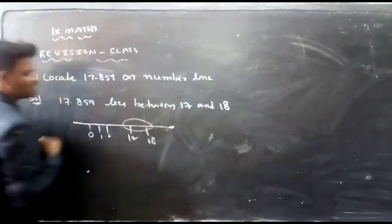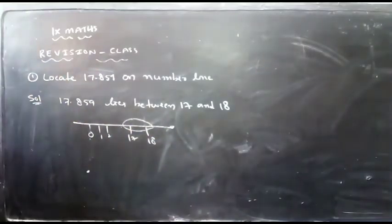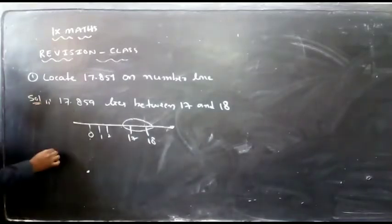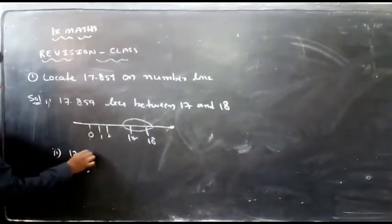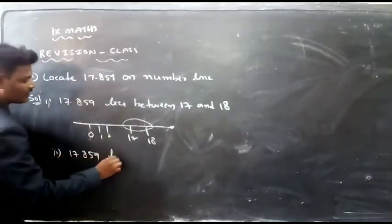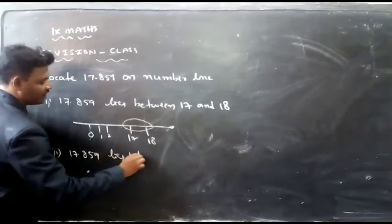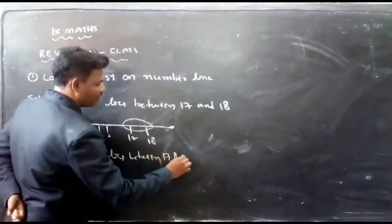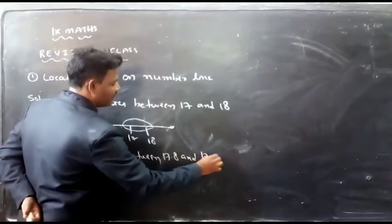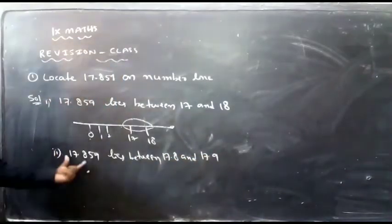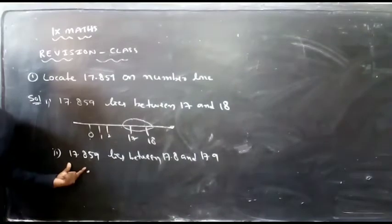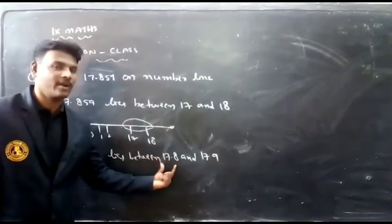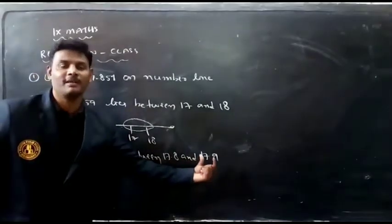So, 17.89 lies between 17 and 18. Next, second step: 17.89 lies between 17.8 and 17.9.